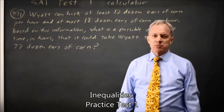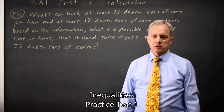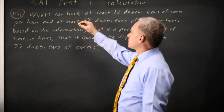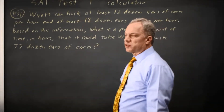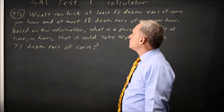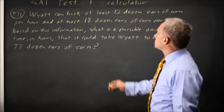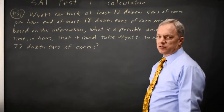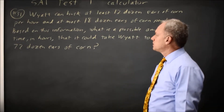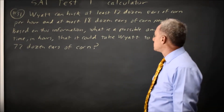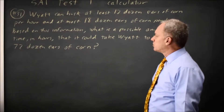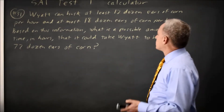This is calculator question number 31 from SAT practice test 1. College Board tells you that a worker can husk 18 dozen ears of corn per hour at most and 12 dozen ears of corn per hour at least, and asks how long it takes to husk 72 dozen ears of corn. There are multiple possible answers — they ask for one possible amount.